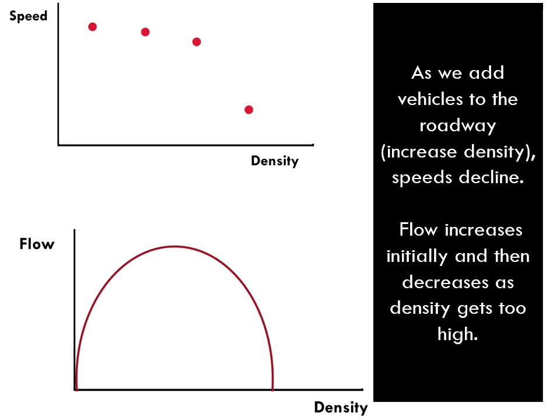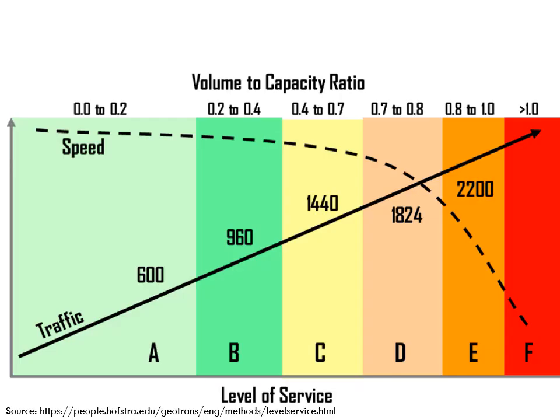We talk about the relationship between density, speed, and flow in a different video, but it is worth a quick refresher here. As we add vehicles to the roadway — that's increasing density — speeds decline. Flow increases initially as we add more cars, but then it decreases as density gets too high and the road gets too crowded. Here is another way to visualize the relationship between vehicle density, speed, and LOS. We start on the left-hand side with very few cars — high speeds and smooth flowing traffic, an LOS of A. But as we add more vehicles, the volume-to-capacity ratio increases. Speeds are stable for a while until LOS D or E, when speeds start to decline quite a bit. Adding even more cars can bring speeds to a complete standstill — then we have LOS F.